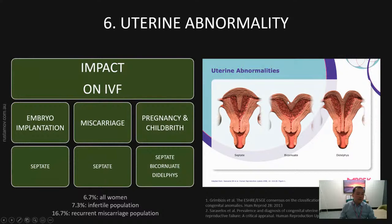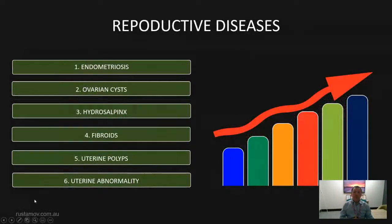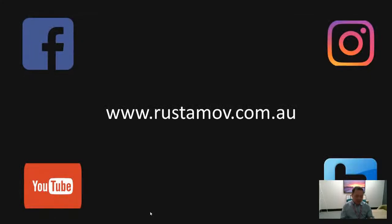Other types of uterine abnormalities are bicornuate uterus and uterine didelphys. Bicornuate uterus doesn't usually cause any implantation problem, but it can cause late miscarriages or premature labor. Uterine didelphys also has more impact during pregnancy and usually doesn't cause significant problems with implantation. These are the six commonly observed conditions which we should be aware of and treat before egg pickup or before embryo transfer. That's the end of this presentation — thanks for your time, I'll catch you next time.